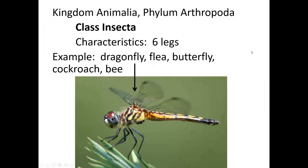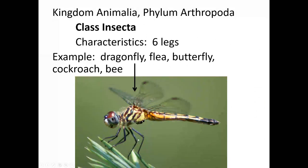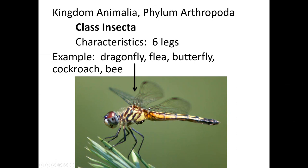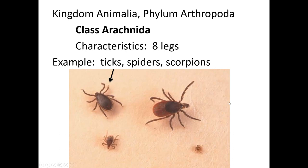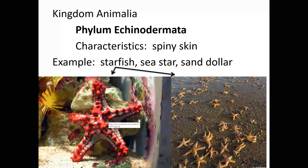Insecta is the biggest group in phylum Arthropoda — everything in this group has six legs. They may or may not have wings depending on where they are in metamorphosis. Pretty much any bug you're familiar with — flies, cockroaches, dragonflies — is in this group, but not spiders. Arachnida is where spiders go, along with ticks and mites. Mites can be very tiny like dust mites or larger.